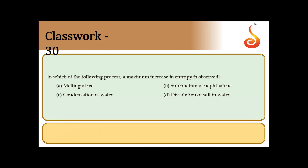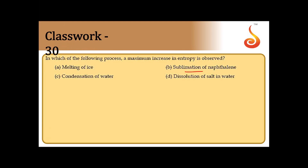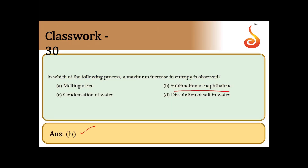Question 30: Maximum increase of entropy is observed in which process? Melting of ice is solid to liquid; sublimation is solid to gas; condensation is gas to liquid; dissolution of salt is solid to liquid. Sublimation involves the greatest entropy change (solid directly to gas). Answer is option D: sublimation.